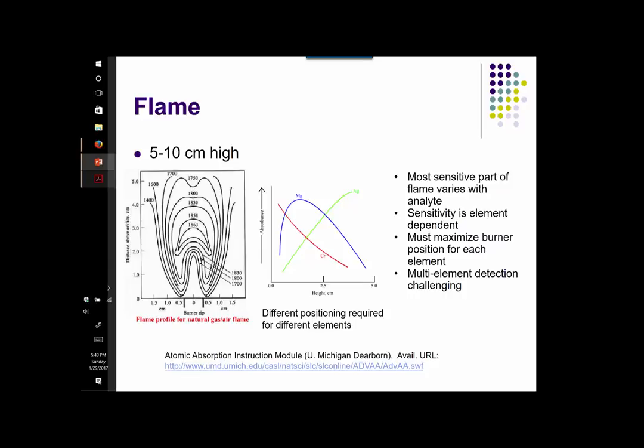Sample preparation for flame AA is actually relatively simple, because the specific chemical form of the element really doesn't matter. Atomization converts the sample into free atoms irrespective of their initial chemically bonded state. Elements in biological fluids like urine and blood can be tested after you simply filter the solid particulates, which would obviously clog the nebulizer — that fine capillary — and after you do suitable dilution.